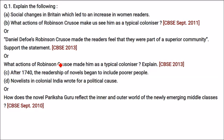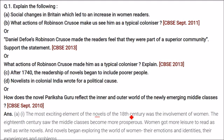These are the questions being asked — the language may differ but the content remains the same. The first question is about social changes in Britain which led to an increase in women readers. The most exciting element of novels of the 18th and 19th century was the involvement of women. The 18th century saw middle class women become more prosperous, gaining leisure time and money to read as well as write novels. Novels began exploring the world of women — their emotions, identities, experiences, and problems.